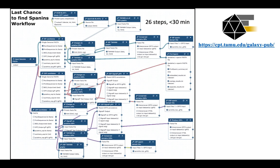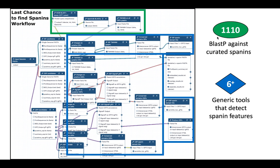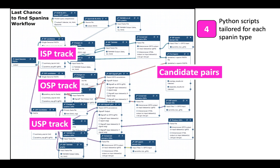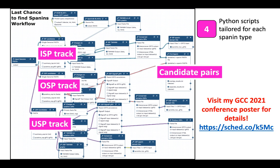So we did this, and this is what the current iteration of the workflow looks like. It has 26 steps, takes about 30 minutes or less to complete, and is housed on our Galaxy instance at the Center for Phage Technology. It incorporates the BLAST database of curated spanins, as well as the generic tools for looking at spanin protein features, and four new Python scripts for each of the different kinds of spanins, as well as pairing I and O spanins. If you'd like additional details on how these work, I would encourage you to visit the poster that we have here at the GCC conference for further discussion.